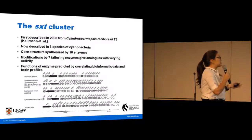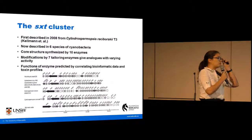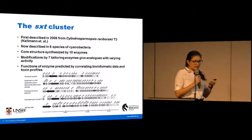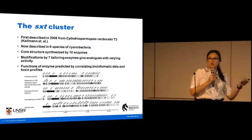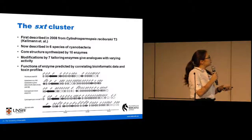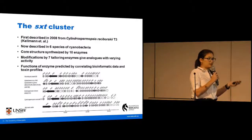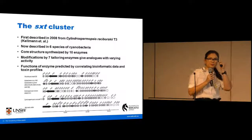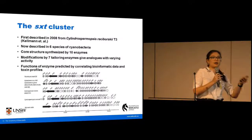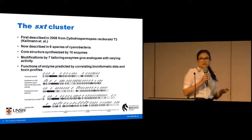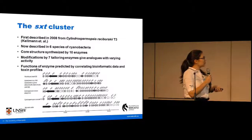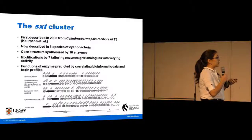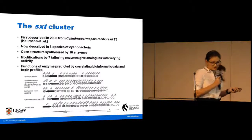The functions of these enzymes have really only been predicted by correlating bioinformatic data — that is, the gene and protein sequence — to the toxin profiles of each species. But we really don't know experimentally how these analogues arise and what mechanisms create them. So our group decided to investigate further the biochemistry behind the creation of paralytic shellfish toxins.